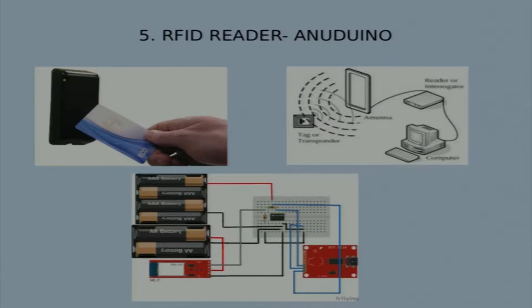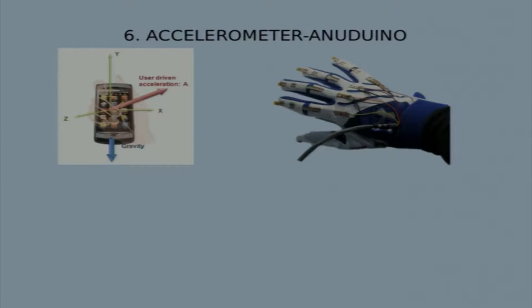What we did was to display the RFID tag number. Based on this, we can develop various experiments. The accelerometer can be used in gesture-controlled robots and for gaming purposes. We tried to calibrate the accelerometer and obtain the accelerations of the X, Y, and Z axes.